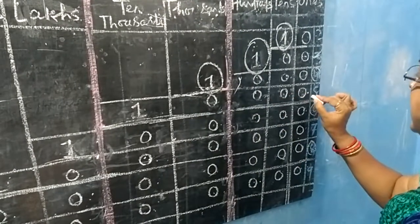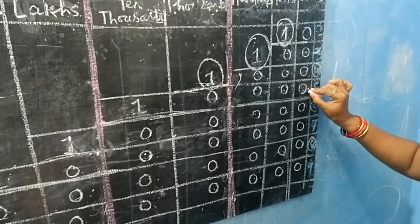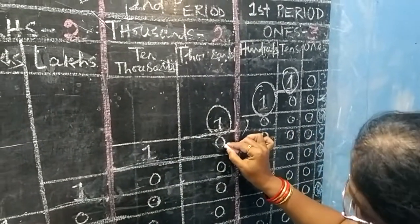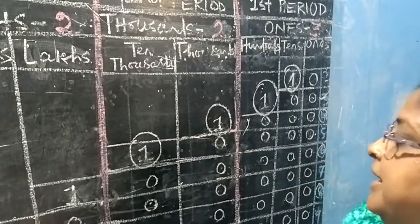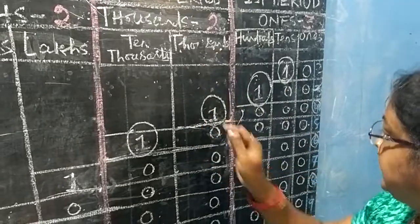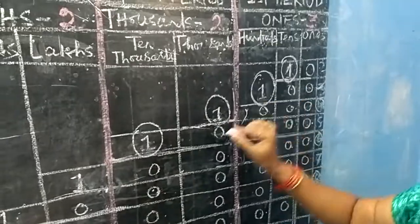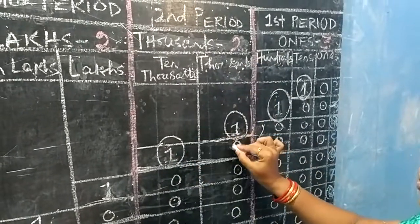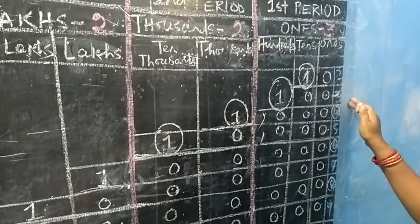Let us write a 5-digit number: 0 1s, 0 10s, 0 100s, 0 1000s and 1 10,000s. In this place, we separate 1s from 1000s — we put a comma. And in the place of 1000s we write 10, so we can speak 10,000s.